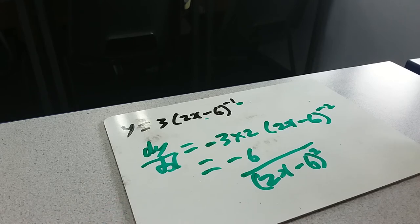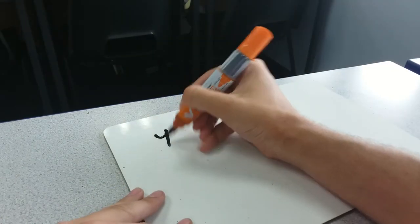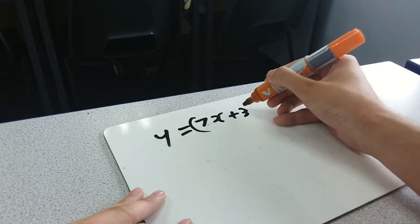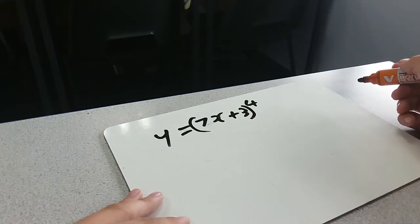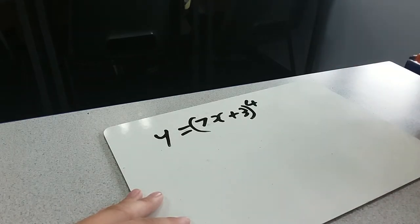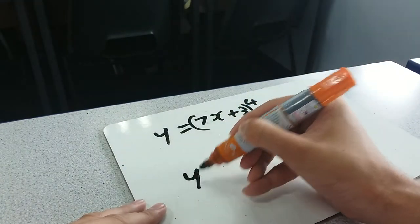I'm going to give you one to have a go at. So, if I gave you y equals 7x plus 3 all to the power of 4, try and use the normal rule to differentiate it. So, not going through all the u's, just try and do it by observation. If you can do that one, here's another one for you to have a go at.